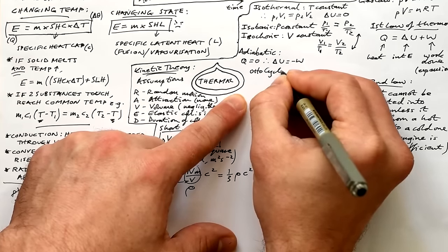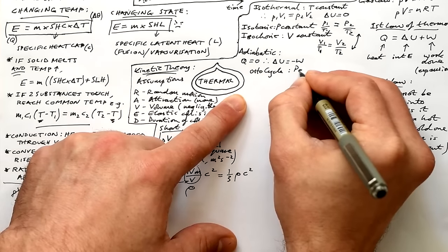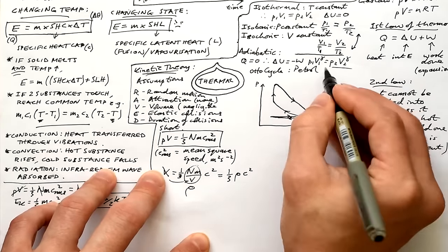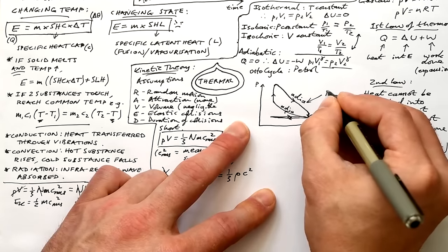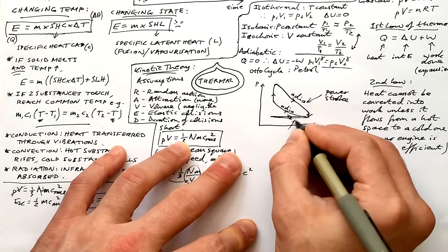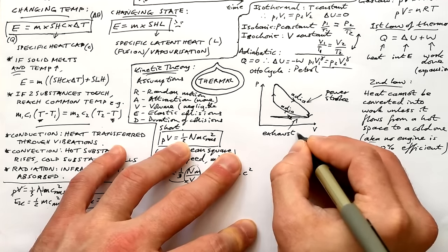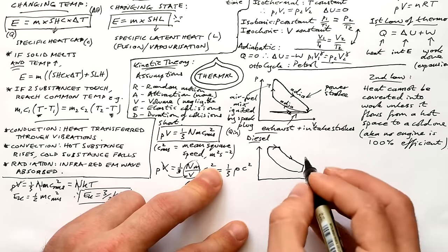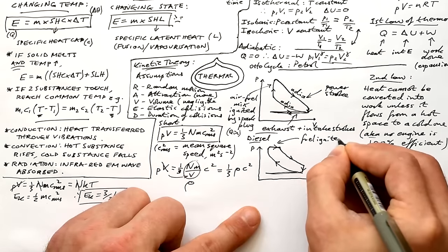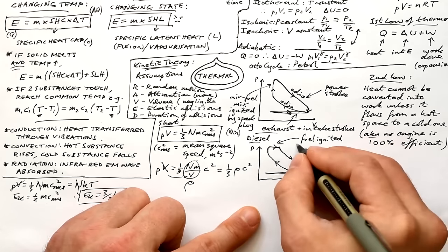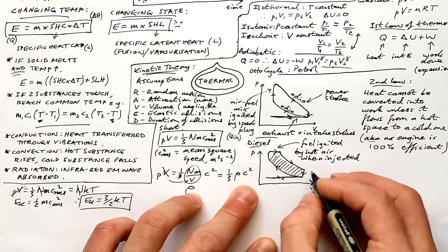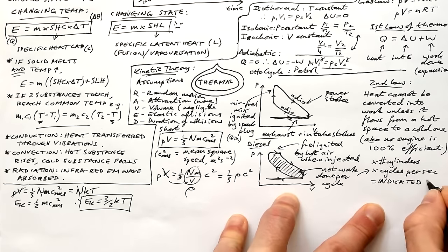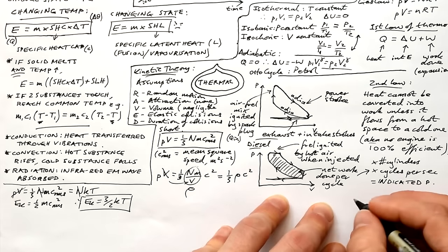Engines — this applies for most A-level specifications, but for AQA only if you do the engineering physics optional module. The Otto cycle for a petrol engine has four strokes: the cylinder goes up, down, up, down. It undergoes adiabatic compression, then the air-fuel mix is ignited by a spark plug, then the power stroke involves adiabatic expansion. Diesel is slightly different: air is compressed and heated, then fuel is injected and ignited by the hot air. The area enclosed in each loop equals net work done per cycle; multiplied by number of cylinders and cycles per second gives the indicated power.